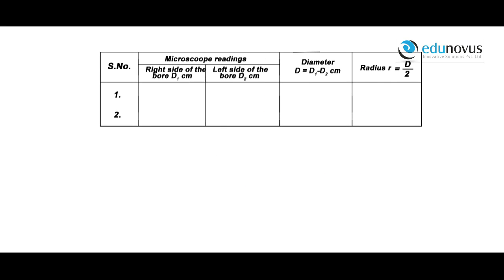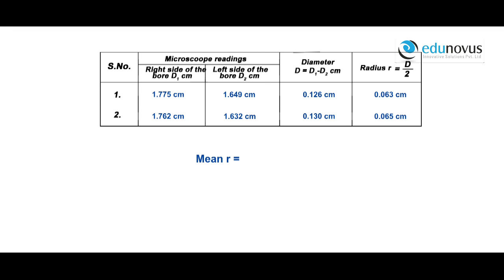The traveling microscope reading focused on the right end of the bore is 1.775 cm. The reading focused on the left end of the bore is 1.649 cm. The difference gives the diameter = 0.126 cm, and half of it gives radius r = 0.063 cm. For the second reading, mean r = (r1 + r2) / 2 = (0.063 + 0.065) / 2, therefore mean r = 0.064 centimeters.